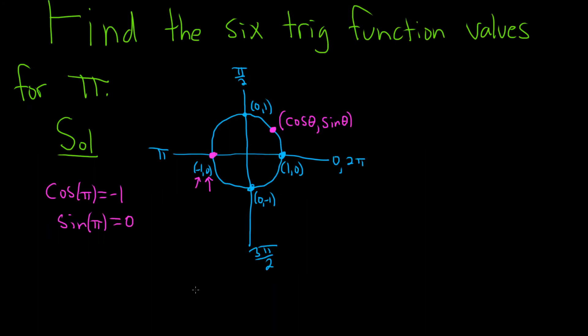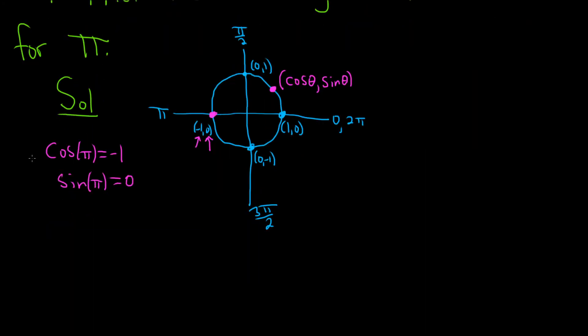And then, so from this, we can get the rest of them. So let's see. Let's do secant. Secant of pi, well, secant is 1 over cosine. I memorize it as 1 over the 1 that starts with the other letter. So it'll be 1 over negative 1, which is just negative 1. So secant of pi is equal to negative 1. So that would be the secant.